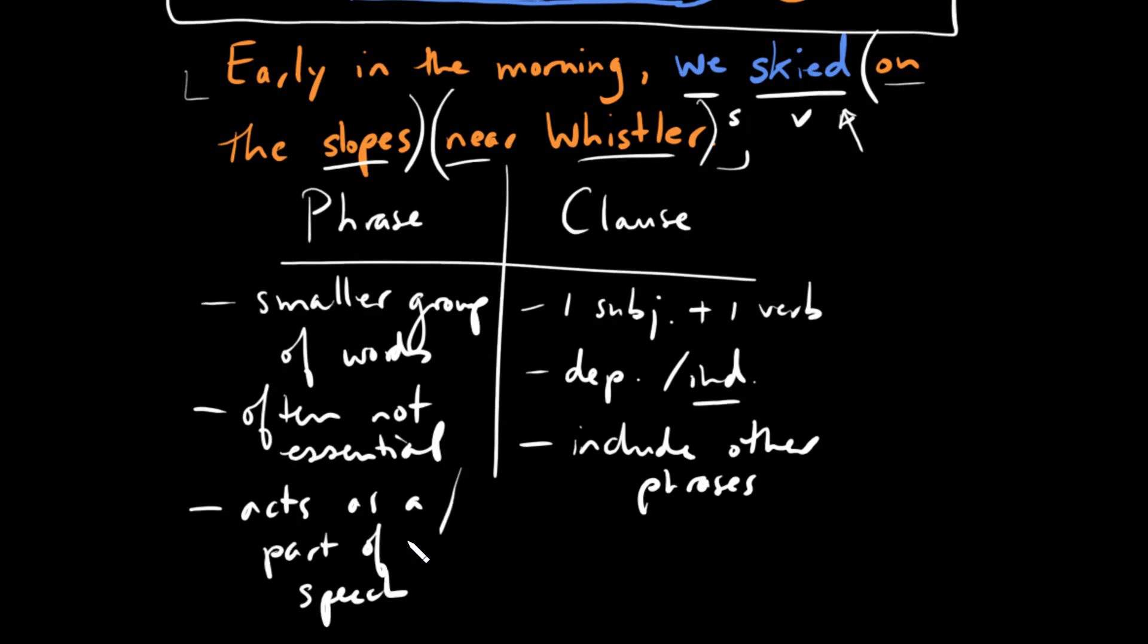They're also acting like a part of speech. In this case if we say we skied where you could say on the slopes. So this prepositional phrase is acting like an adverb. It tells you about the verb. And the other one is acting the same way. It's answering the question, where did we ski? So both of these are acting like adverbs and that's why we can say that these phrases often act as a part of speech.